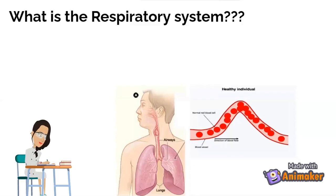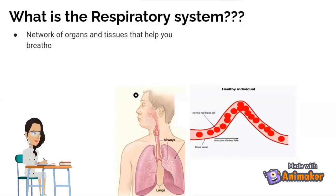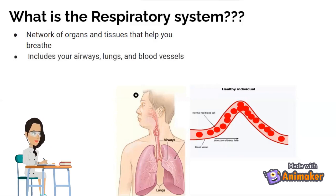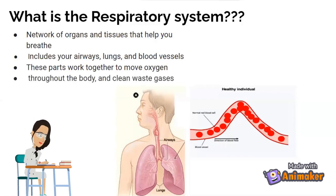What is the respiratory system? The respiratory system is a network of organs and systems that help you breathe. That includes your airways, lungs, and blood vessels. These parts work together to move oxygen throughout the body and clean waste gases.